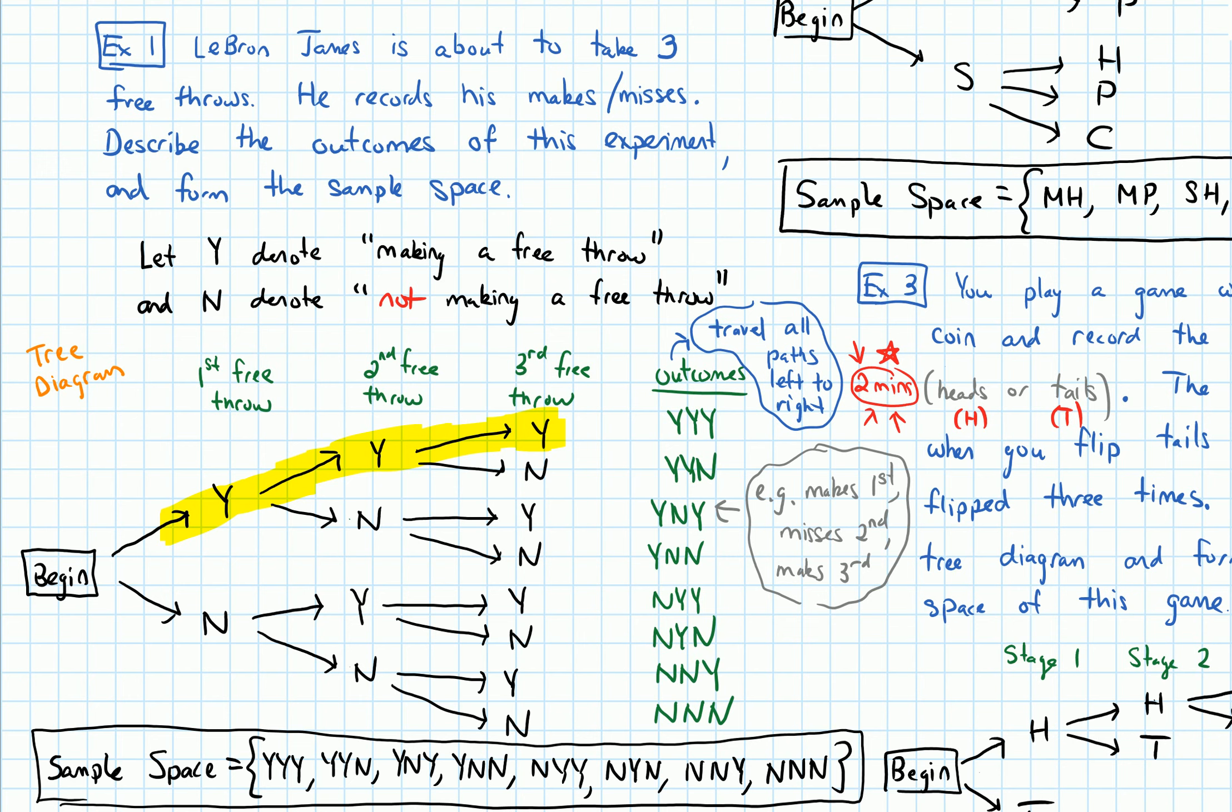Similarly, this N gets split into two branches, one going to a Y, one going to an N. And because at each step the number of branches that each outcome is split into is the same, that gives us this multiplication happening.